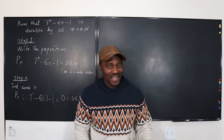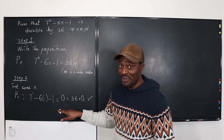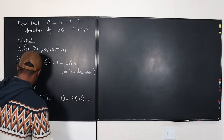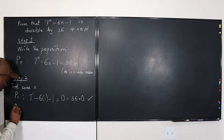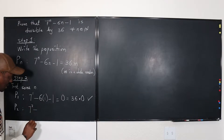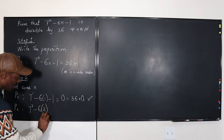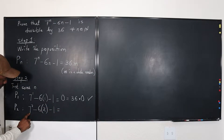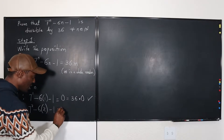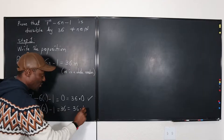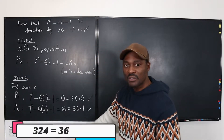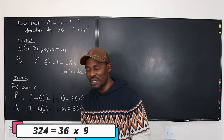Zero is not the nicest number to get because anything divides zero, so let's pick another number. Let's try n equals 2. We have 7 squared minus 6 times 2 minus 1. That gives us 49 minus 12, which is 37, minus 1 is 36, which equals 36 times 1. So this is also correct. And if you take n equals 3 — 7 cubed minus 18 minus 1 — it will also give you a number divisible by 36. Let's move on to step three.